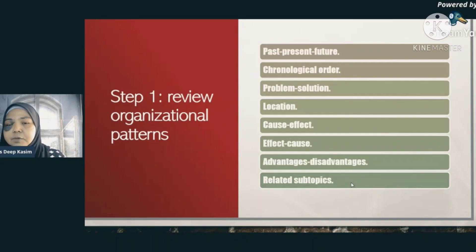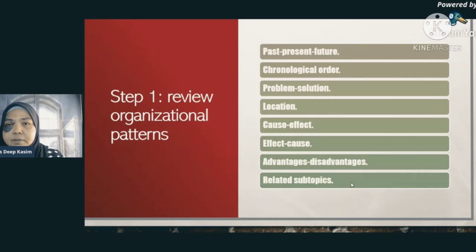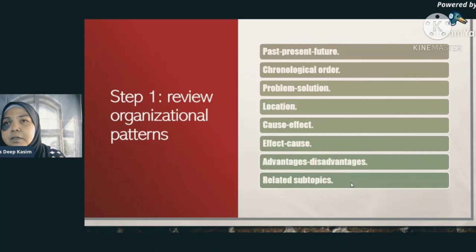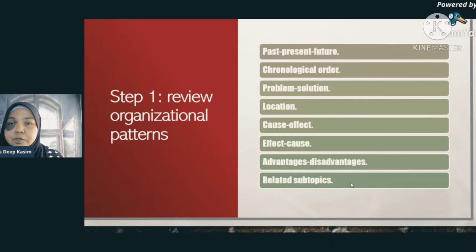We do not include Monroe's Motivated Sequence for this exercise because in Monroe's Motivated Sequence you must have three main points in the body, and we don't have time for three main points. But in the future, in your career, if you are asked to give a speech and you have 10 to 20 minutes, then of course you can use Monroe's Motivated Sequence. What we are discussing today is only for the preparation of the impromptu speech you are going to give later.